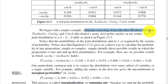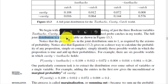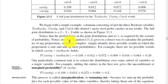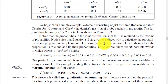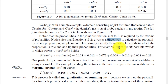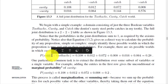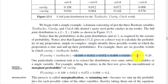We represent a full joint distribution for cavity, toothache, and catch. The domain consists of three Boolean variables, and the full joint distribution is 2×2×2. The probabilities in the joint distribution sum to one as required by the axioms. For example, there are six possible worlds in which cavity ∧ toothache holds, so P(cavity ∧ toothache) is computed by summing those probabilities.